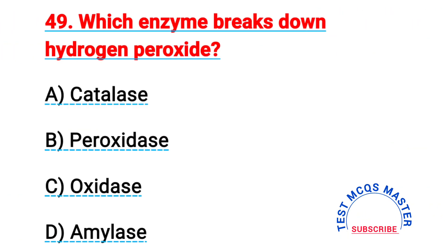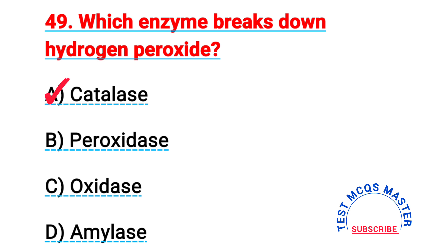Question number forty-nine: which enzyme breaks down hydrogen peroxide? The right answer is A, catalase.